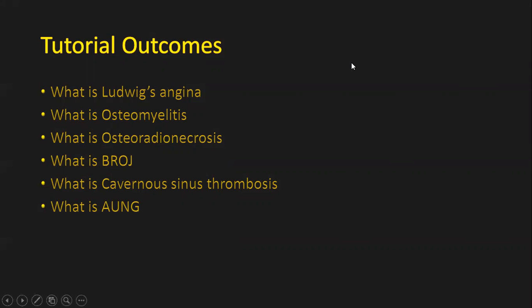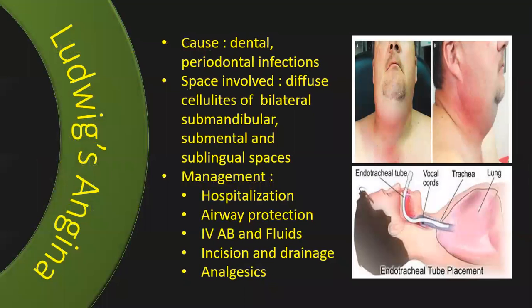By the end of this tutorial, I'm expecting you to know what is Ludwig's angina, osteomyelitis, osteoradionecrosis, bisphosphonate-related osteonecrosis of the jaw, and cavernous sinus thrombosis. And finally, acute ulcerative necrotizing gingivitis.